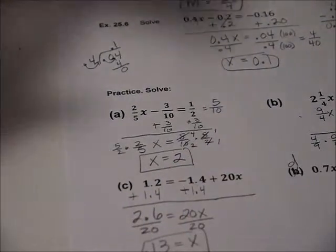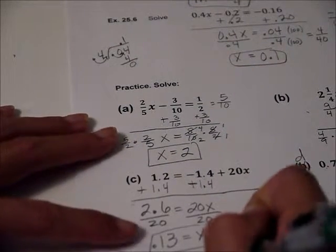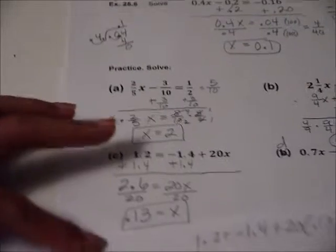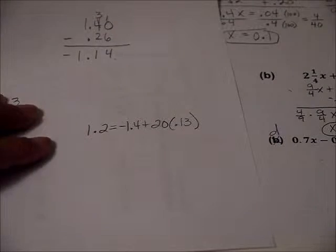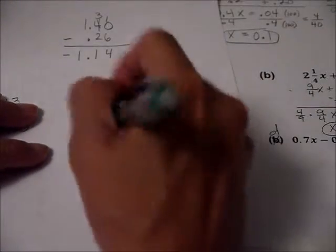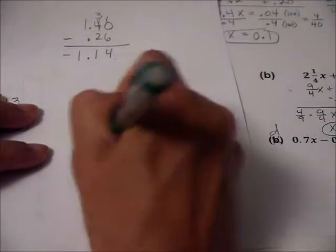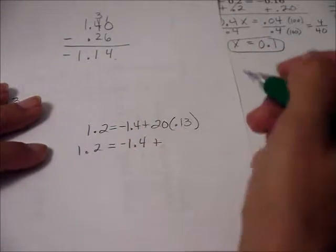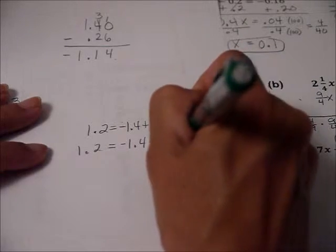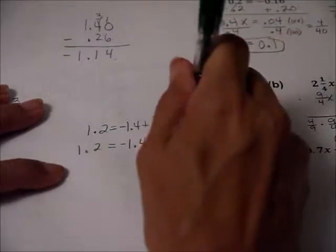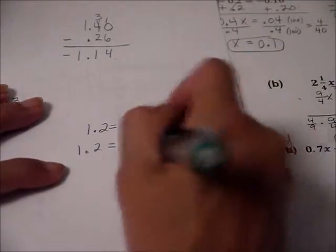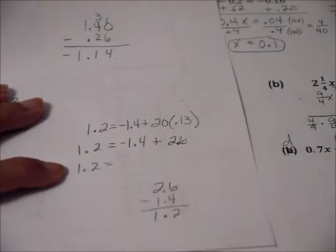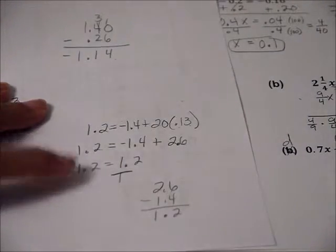But let me check my work. I want to make sure this is the correct answer. So I'm going to go check it. Okay. So 20 times 0.13. Well, 20 times 13. Here, I'll leave it like this. 20 times 13 is 260. But we've got two decimals, so I'm going to get 2.6, really. So now, to finish it out, we're going to do 2.6 minus 1.4, and we get 1.2. So it's true. All right.